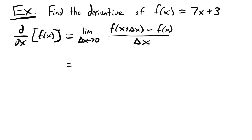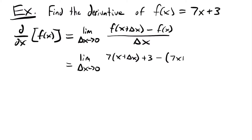We'll write the limit as delta x approaches 0 equal to 7 times (x plus delta x) — we plugged in this quantity into x — and then we're going to add our 3 and then subtract our function (7x + 3). Remember, always put your function in parentheses so that this negative is distributed to each part and not just the 7x.